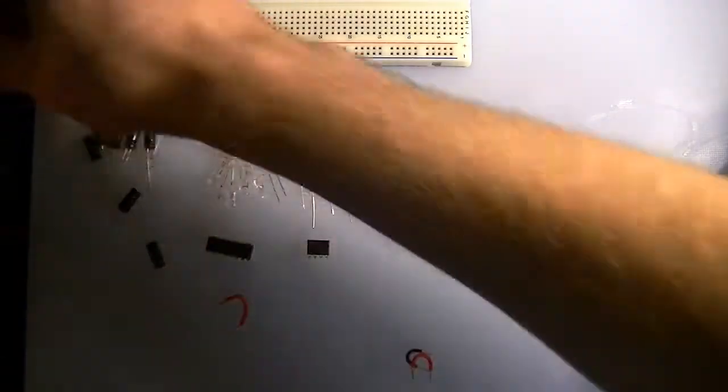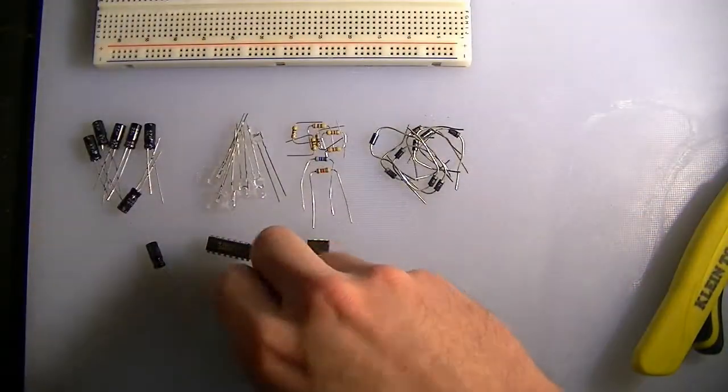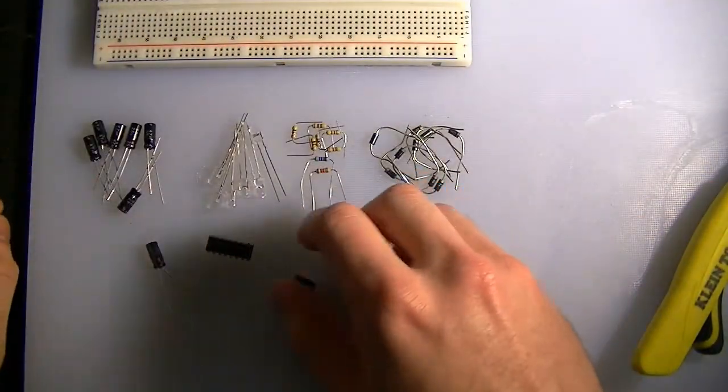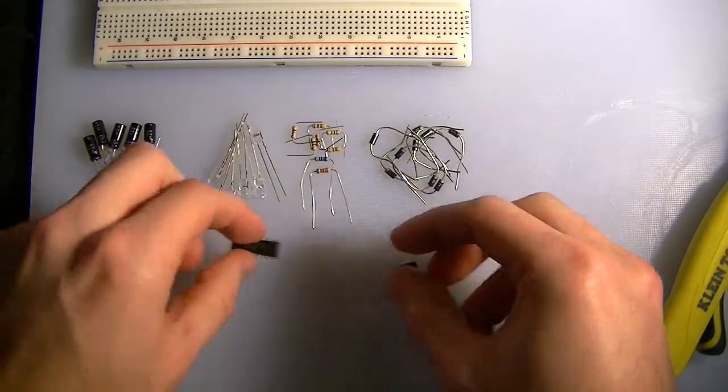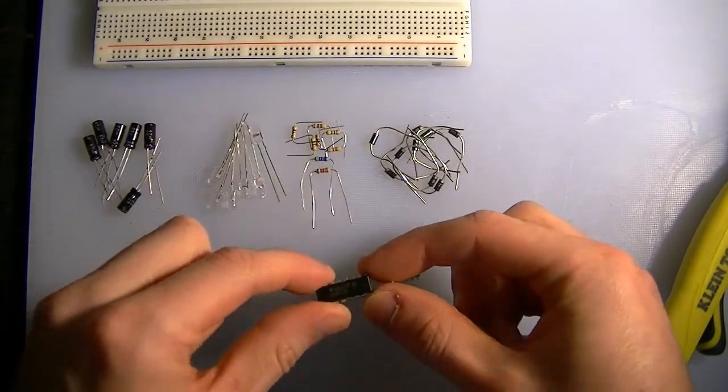As for parts, you can see here we've got our 555 timer IC, our CMOS decade counter, the 4017.